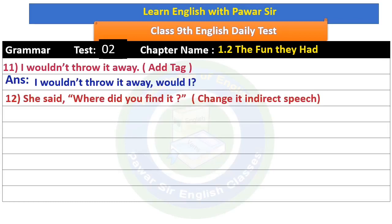Second sentence part: 'She said, where did you find it?' Change it into indirect speech. Vidyarthi Mitra, we need to identify the type of sentence first. The direct speech needs to be converted to indirect speech. The sentence type must be identified — in English, 'where did you find it?' is a WH question.